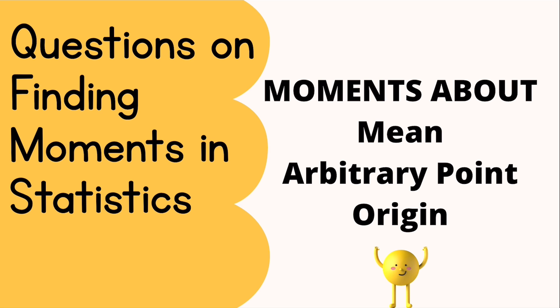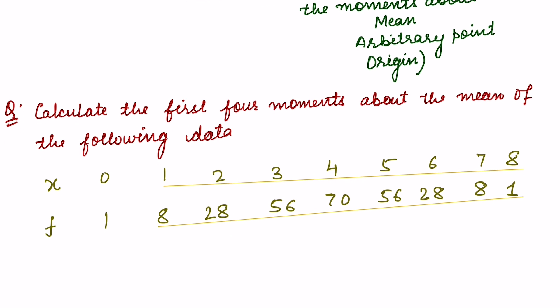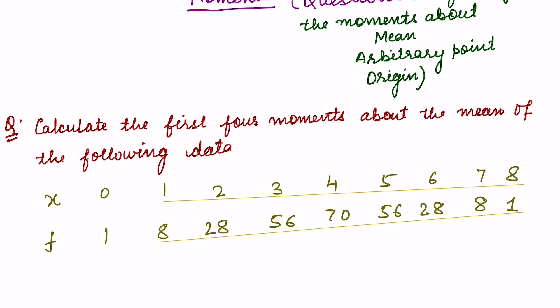As promised in the last lecture, we'll discuss two questions: how to find moment about the mean and about an arbitrary point, and using the relation we can find the moment about the origin also. We'll work through a few questions on moments so you can find the three moments — about the mean, about the arbitrary point, and about the origin — for any question. We'll take two questions.